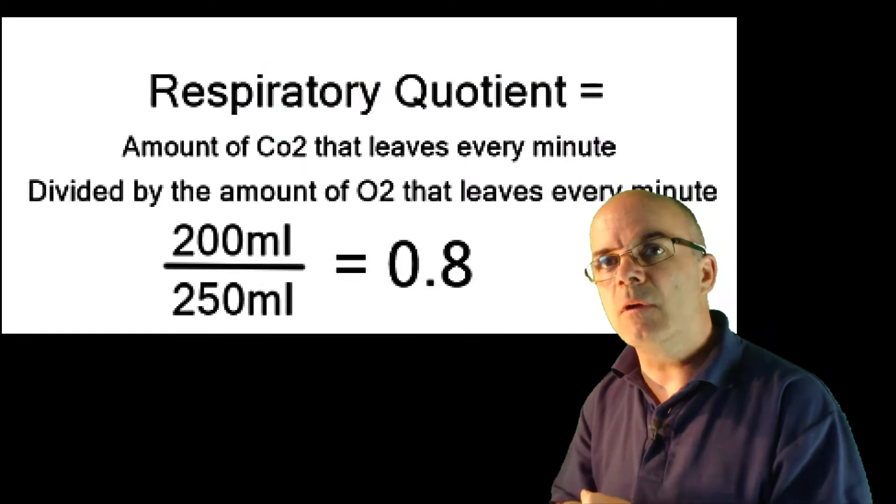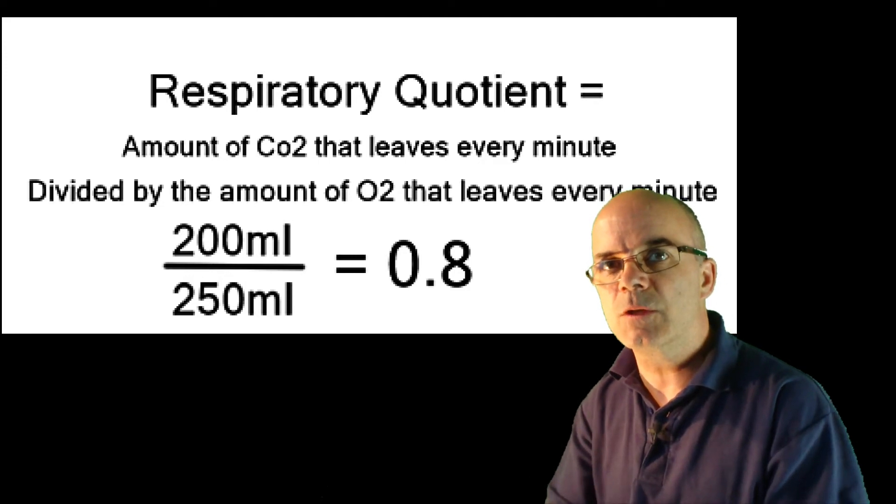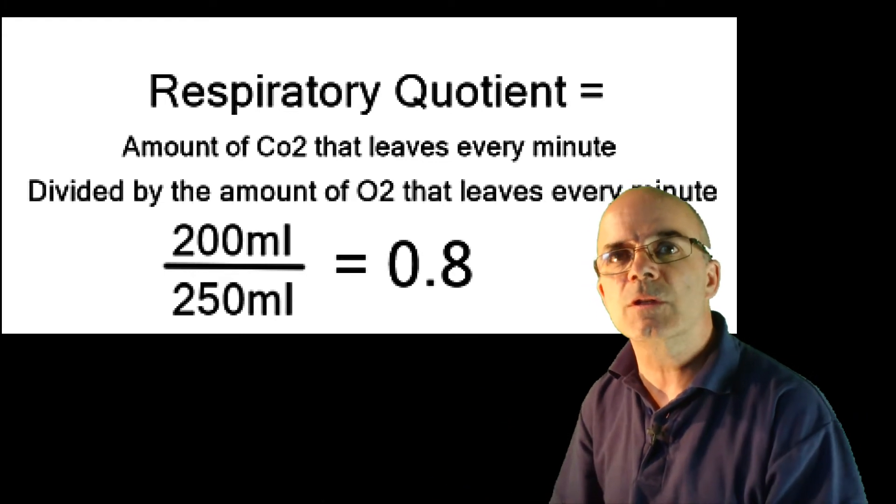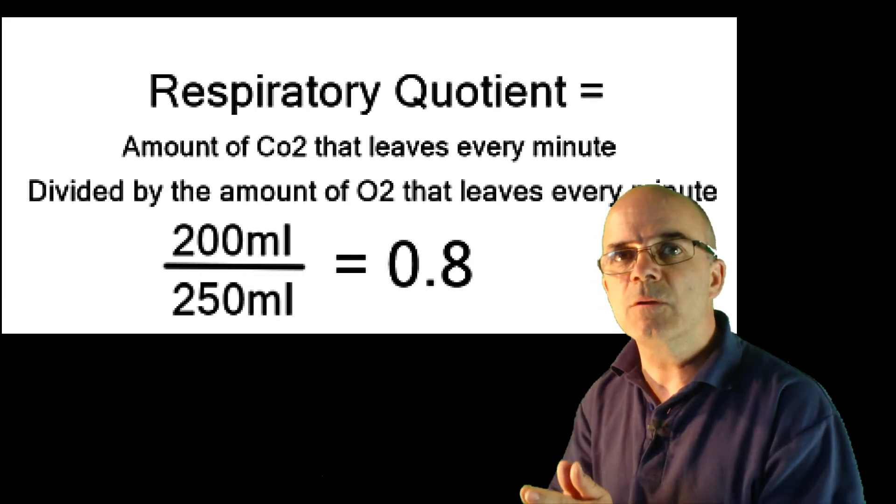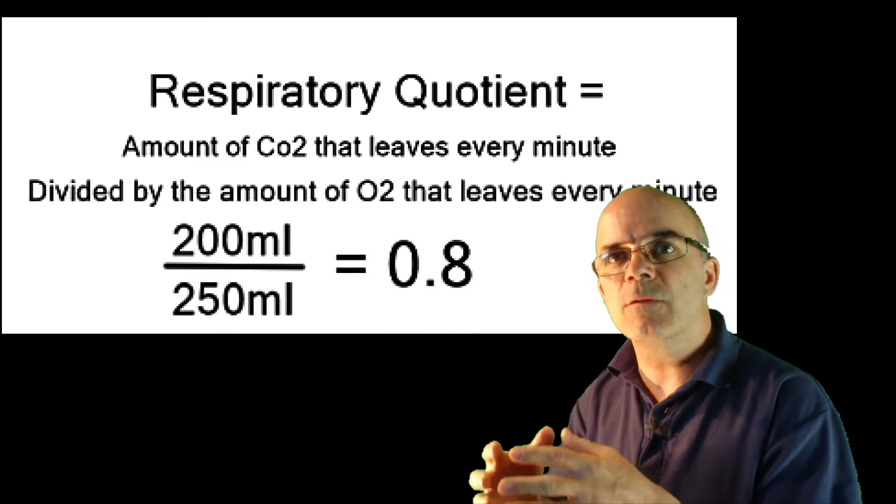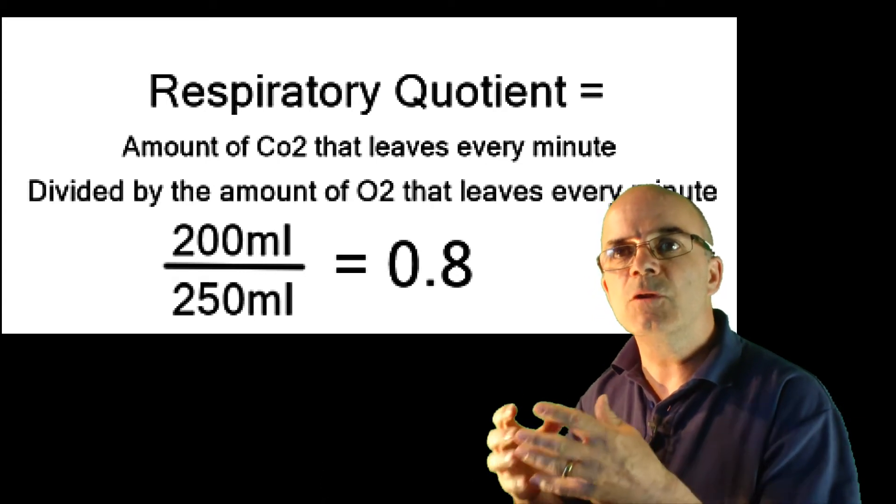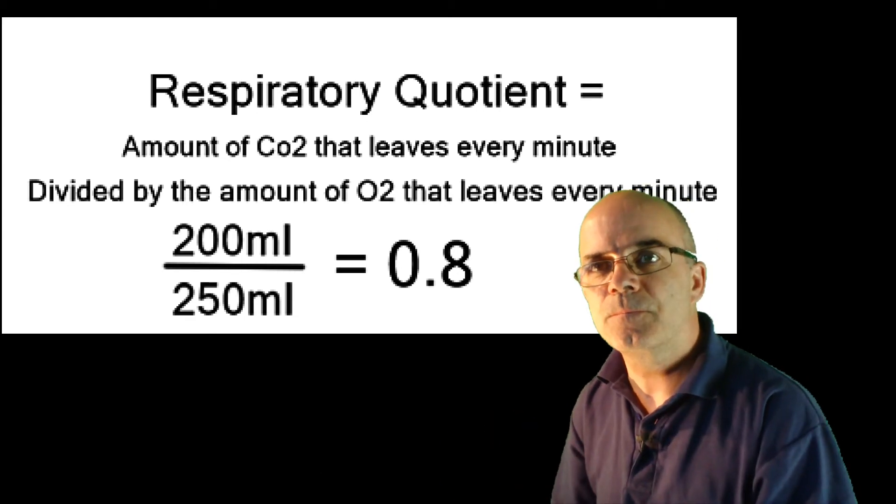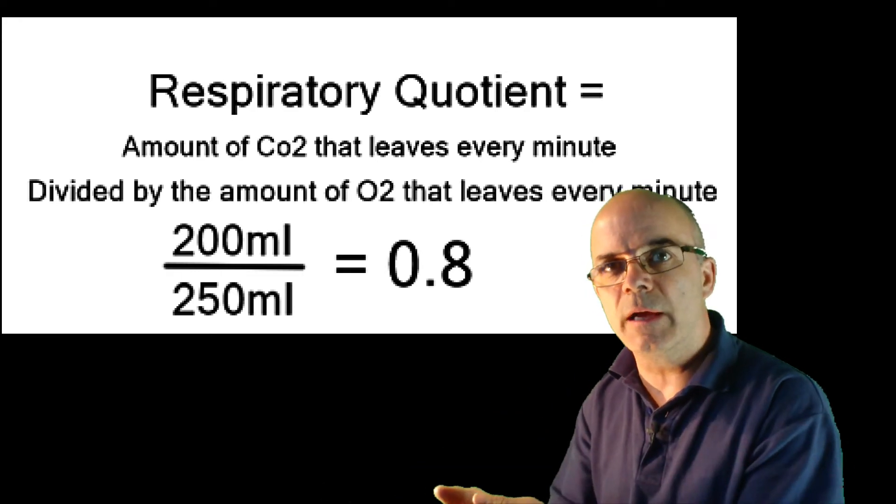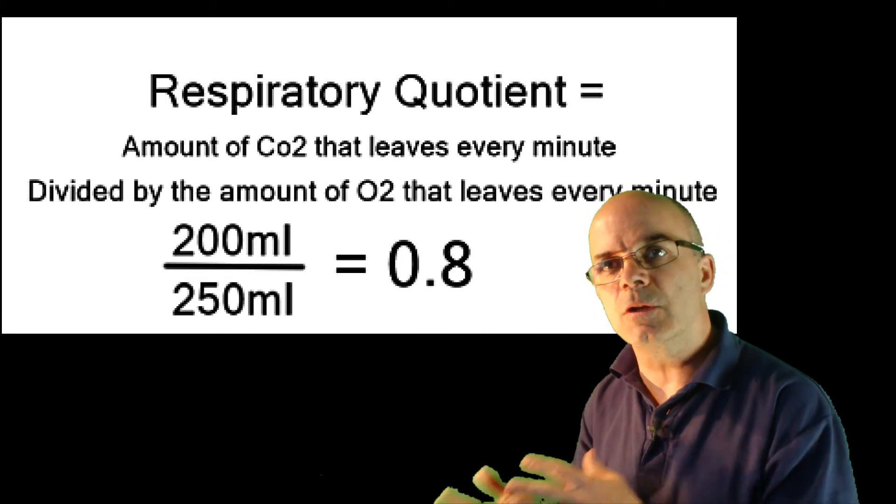The levels in the alveoli, however, are further influenced by two other factors. These are both related to the presence of CO2. This is leaving the body as the O2 is entering, and the relationship between the two is known as the respiratory quotient. So this amount of CO2 that leaves the body every minute, approximately 200 mils, divided by the amount of O2 which is entering the body every minute, approximately 250 mils, gives you the respiratory quotient, which is 0.8. We also need to take into account the pressure of CO2 in the alveoli, which is approximately 40 mmHg. This will displace some of the oxygen content in the alveoli.